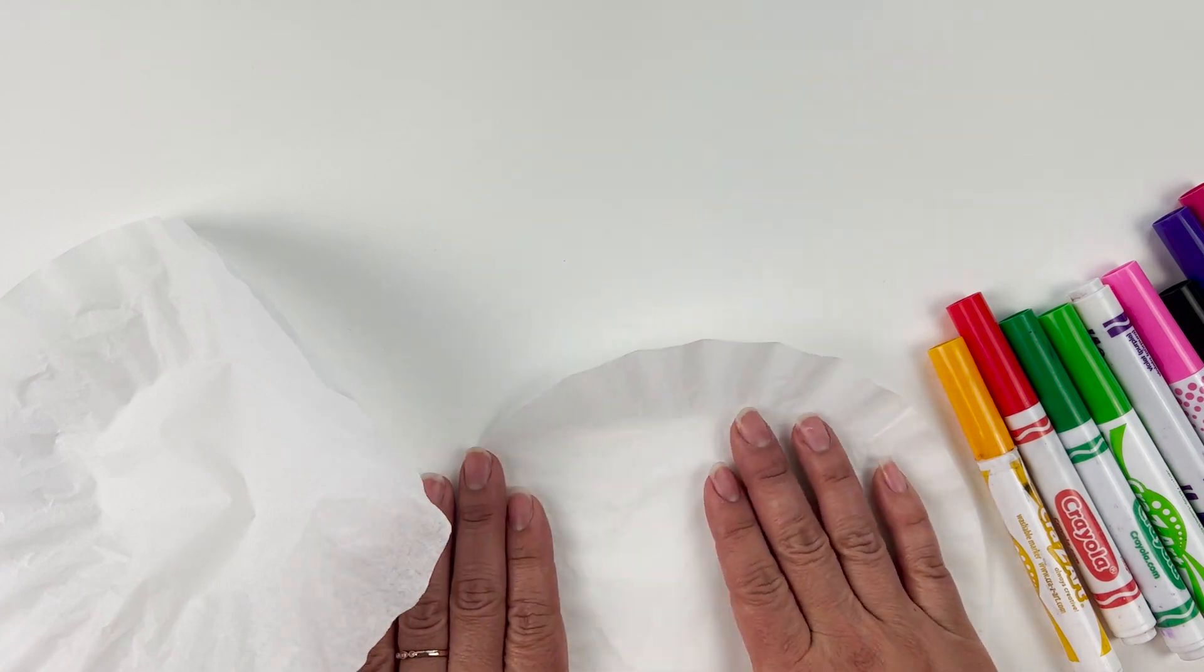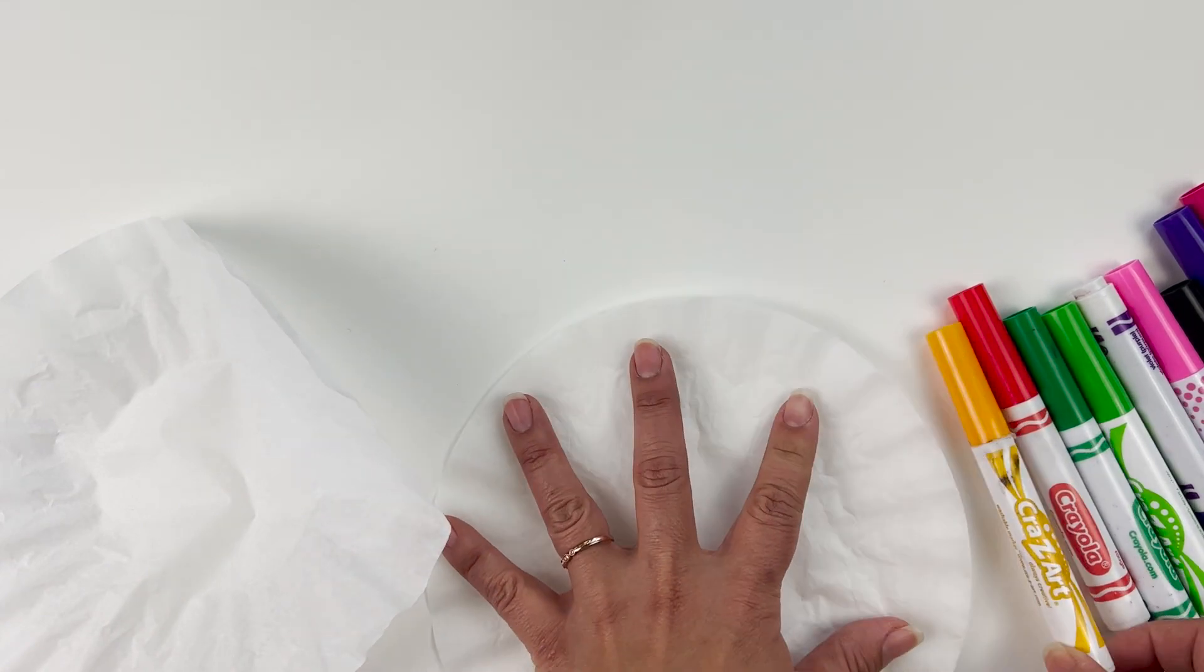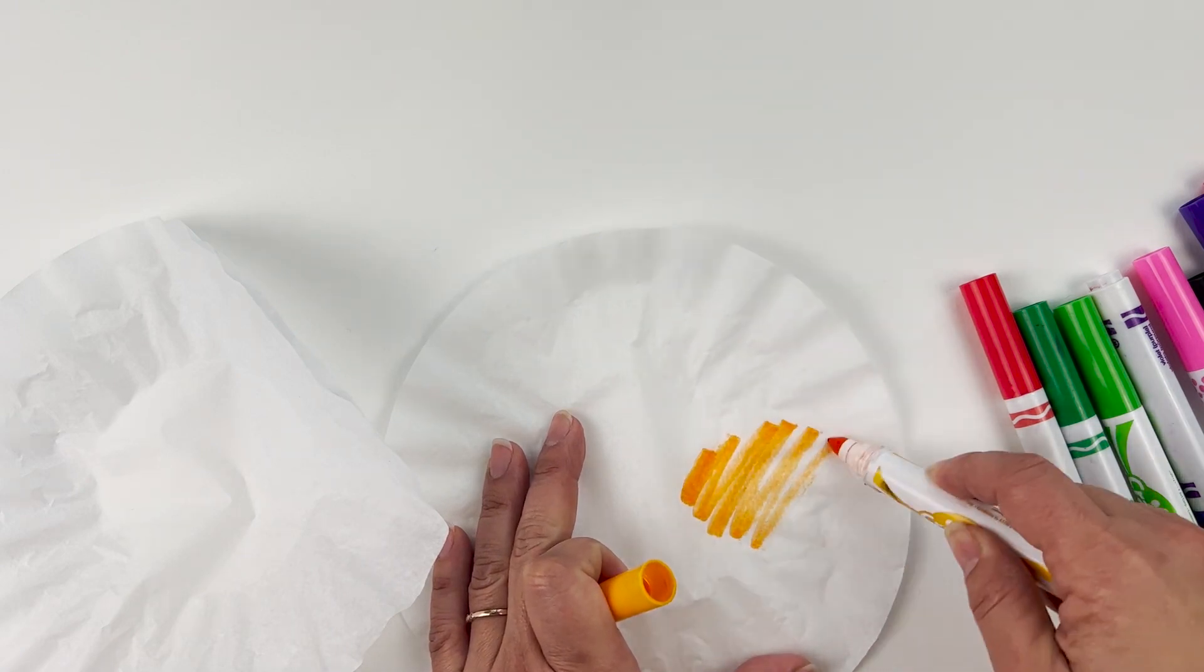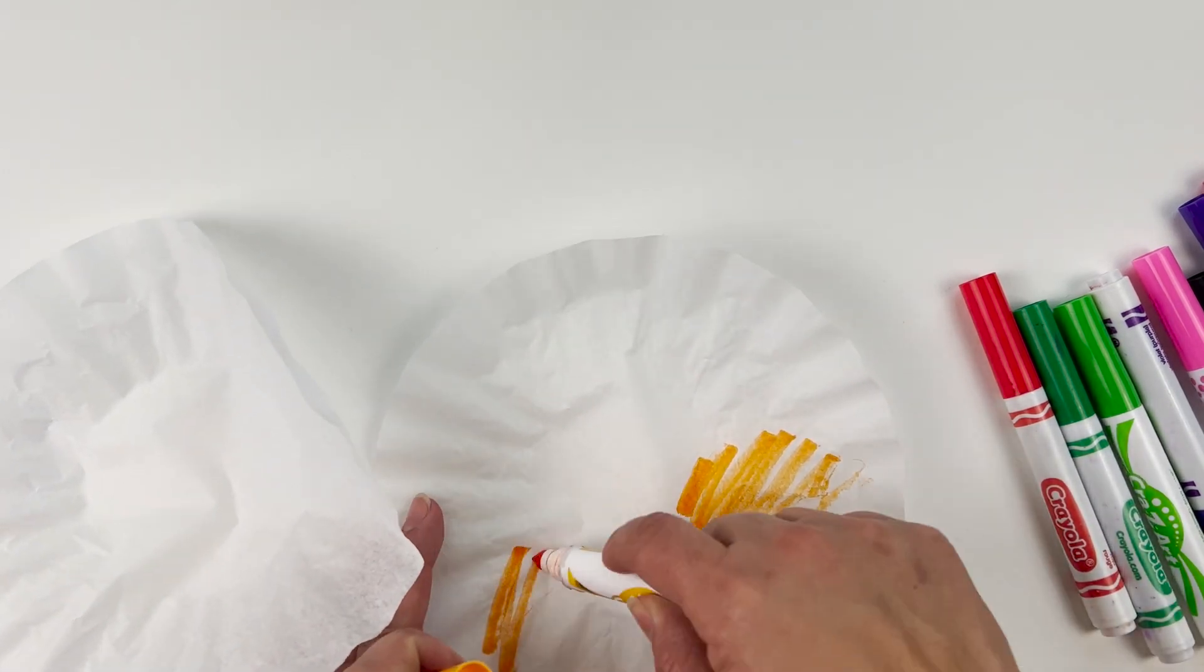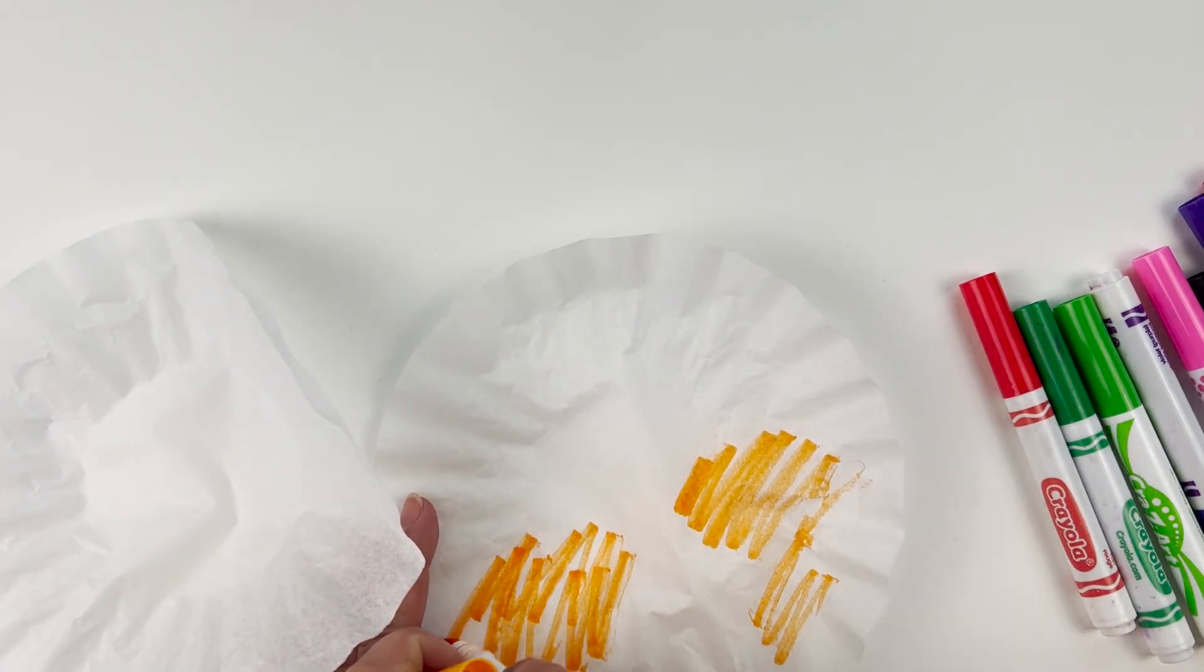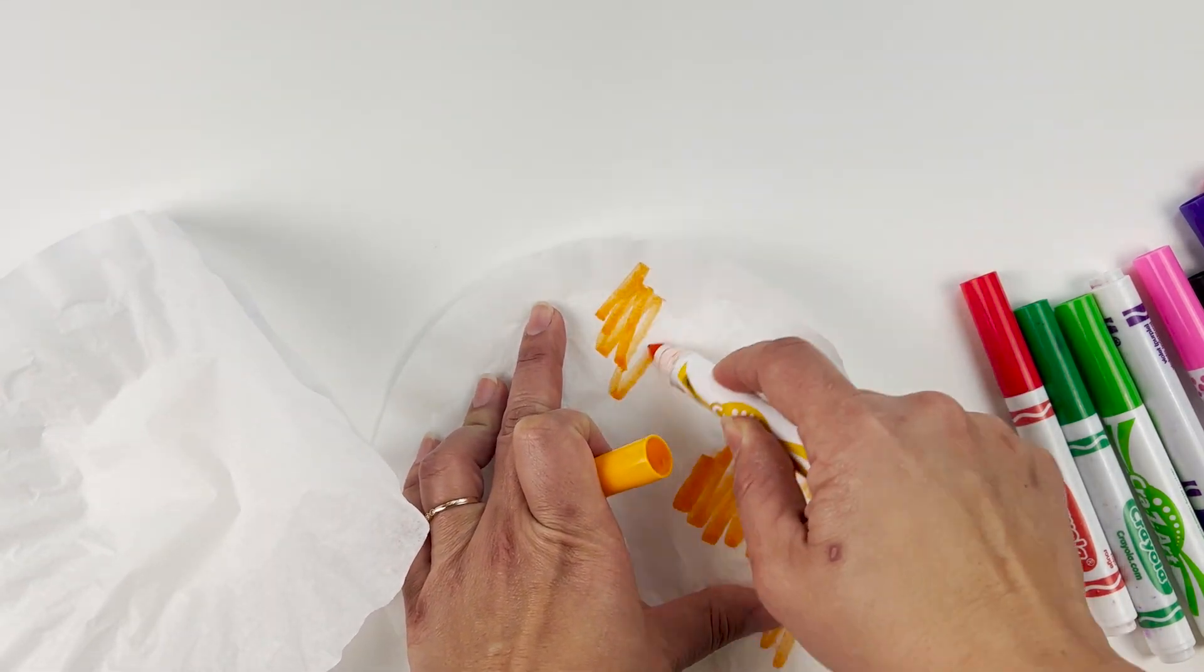Then what you do is take your markers and just fill them with color. You can just make it messy. It's fine because it's all going to blend together.